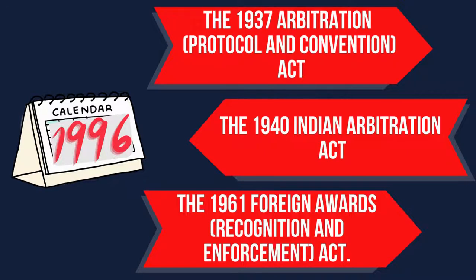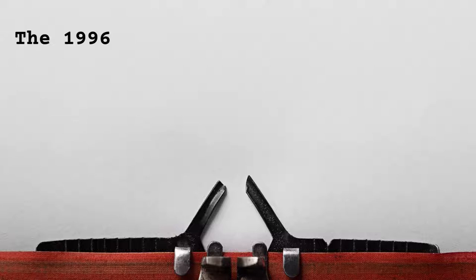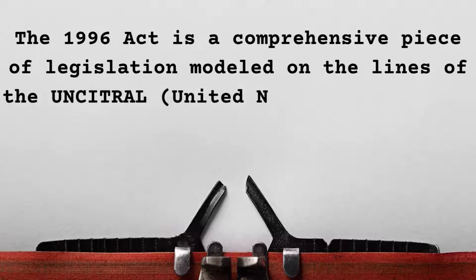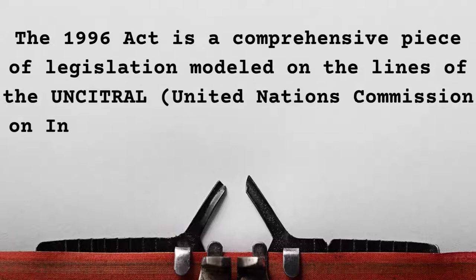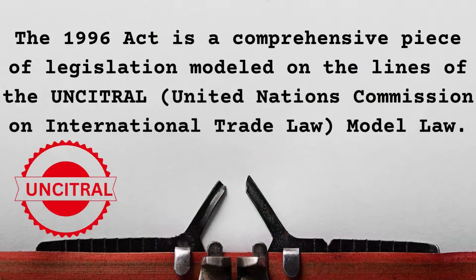The government enacted the Arbitration and Conciliation Act of 1996 in an effort to modernize the outdated 1940 Act. The 1996 Act is a comprehensive piece of legislation modelled on the lines of the UNCITRAL Model Law, which is the United Nations Commission on International Trade Law.